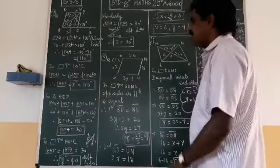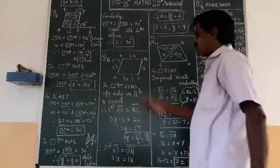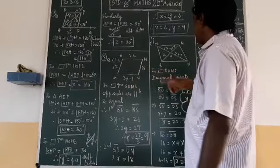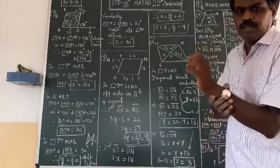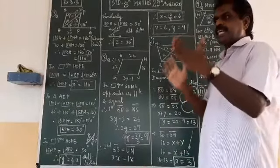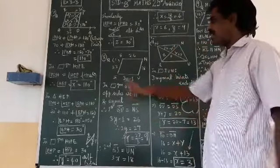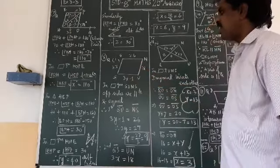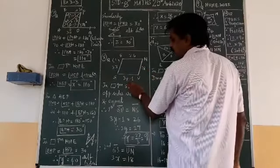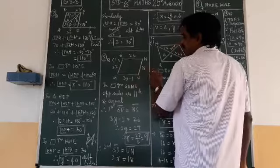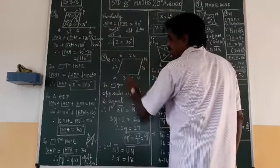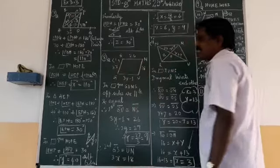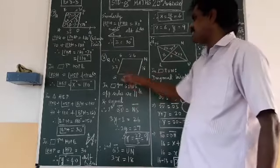Then eighth question, what is given? They are telling GUN and RUN are both parallelograms. In parallelogram what is the condition? Opposite sides are parallel and equal, and diagonals bisect each other. Here given GU equal to 3Y minus 1, UN equal to 18, NS equal to 26, and GS equal to 3X. So we have to find the X and Y value.